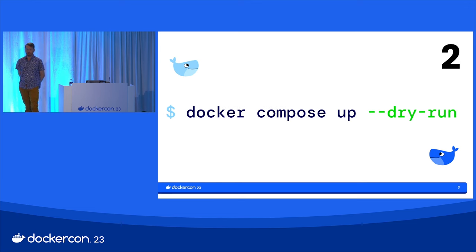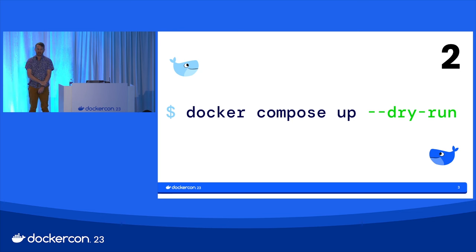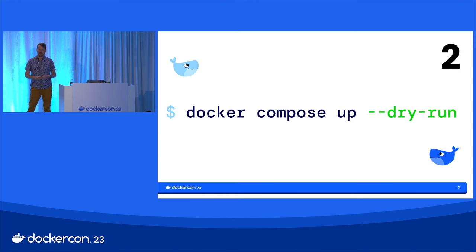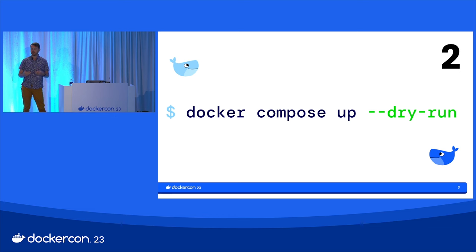Continuing with the debugging theme: Compose up --dry-run. Dry run is a pretty new flag we added. It actually works on essentially every command. This is really helpful if you've ever wondered, am I about to recreate a service when I run up? It will talk to the engine and communicate with the API, but it's only going to do non-destructive operations — it might look at what volumes or networks are there.